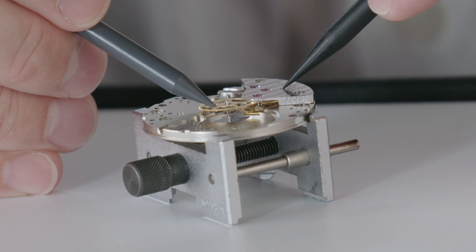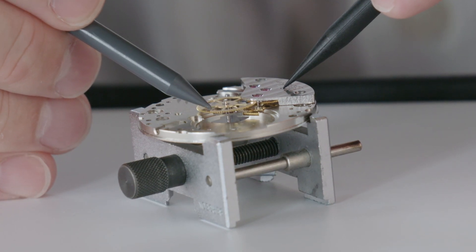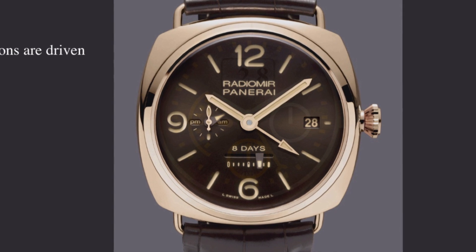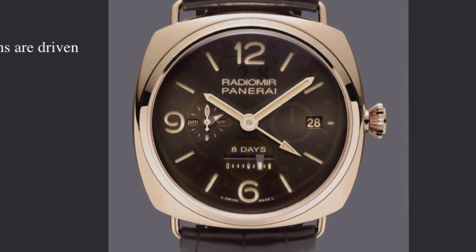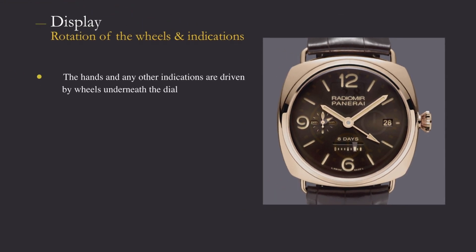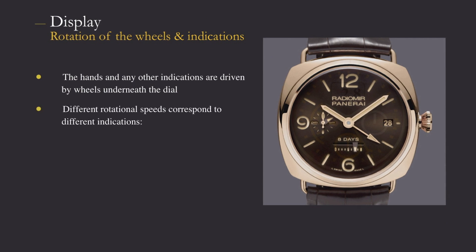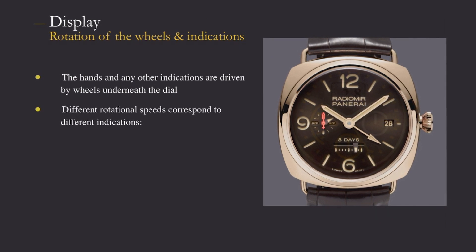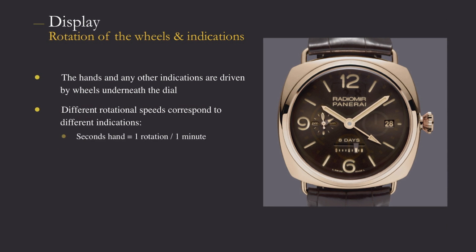As the hands and other indications are driven by wheels underneath the dial, different rotational speeds correspond to different indications. A second hand needs one rotation per minute, a minute hand needs one rotation per hour.